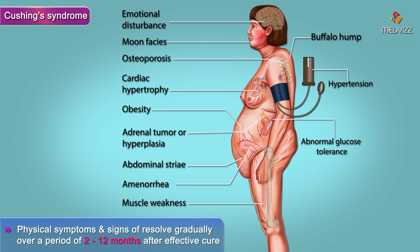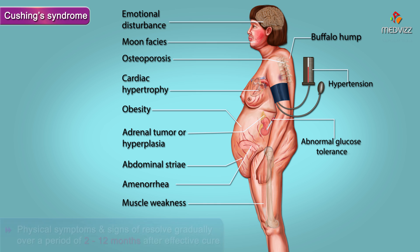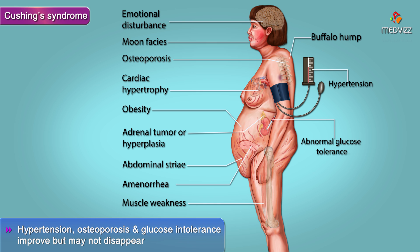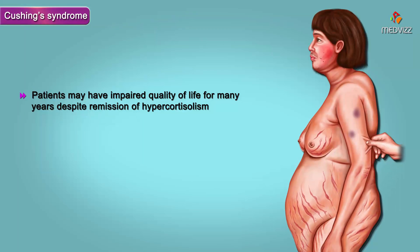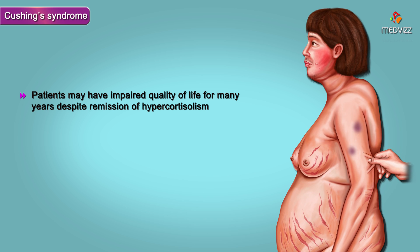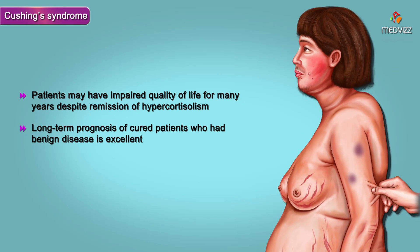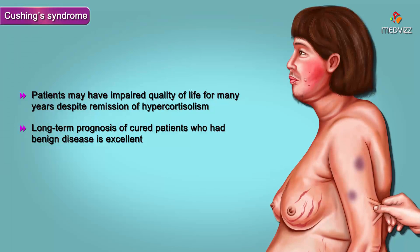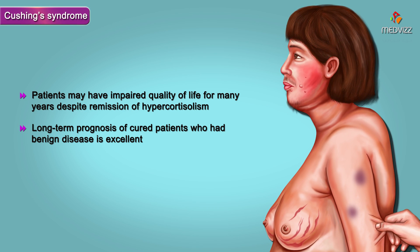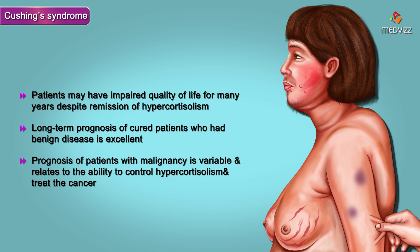The physical symptoms and signs of Cushing's syndrome resolve gradually over a period of 2 to 12 months after effective cure. Hypertension, osteoporosis, and glucose intolerance improve but may not disappear. Patients may have impaired quality of life for many years despite remission of hypercortisolism. However, the long-term prognosis of cured patients with benign disease is excellent. The prognosis of patients with malignancy is variable and relates to the ability to control hypercortisolism and treat the cancer.